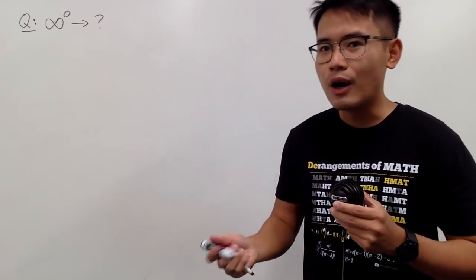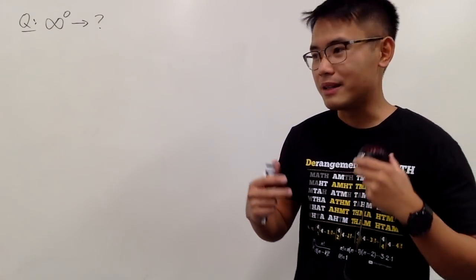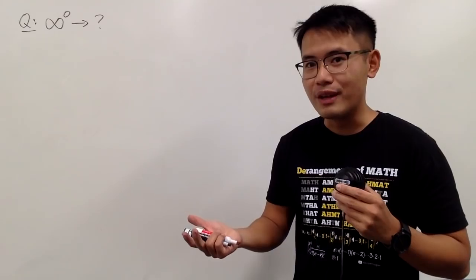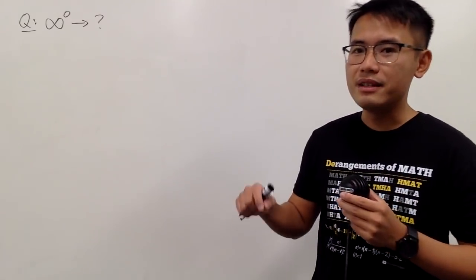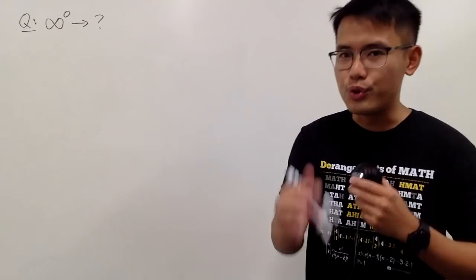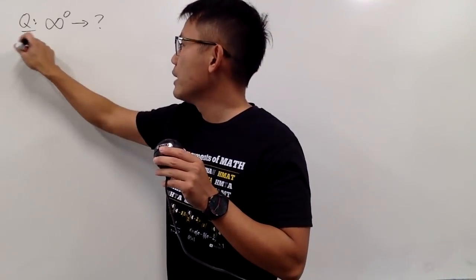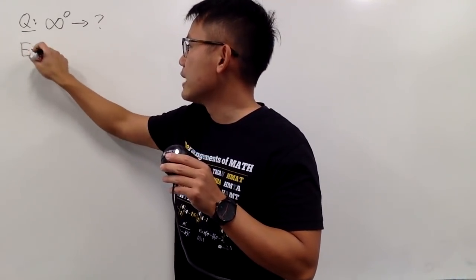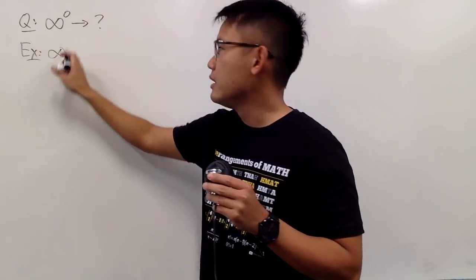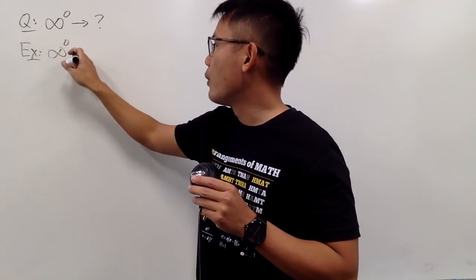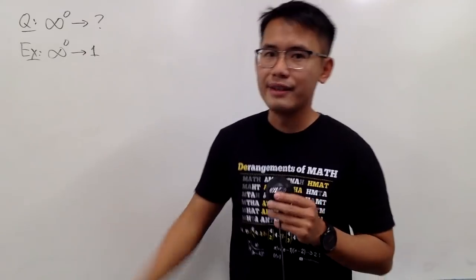I have a similar video on zero to the zero's power, which also gives you different numbers, so be sure you guys check that out — I'll have the link in the description. But anyway, here is the first example. It is of course possible to have infinity to the zero's power approaching one.